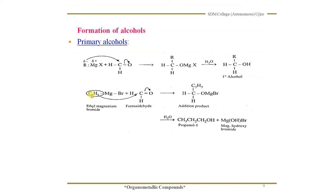For example, ethyl magnesium bromide is treated with formaldehyde. C2H5 goes to the carbon of formaldehyde, and MgBr goes to oxygen, forming an addition product. Further, this is subjected to hydrolysis — addition of water takes place. So you will get CH3CH2-CH2OH, which is 1-propanol. Along with this, MgBr and OH form a byproduct, magnesium hydroxy bromide.